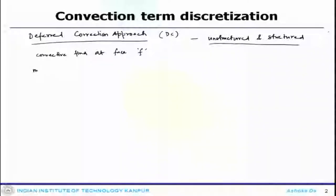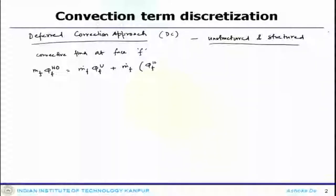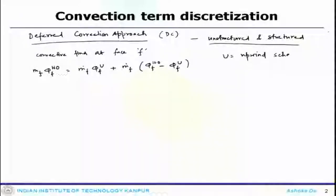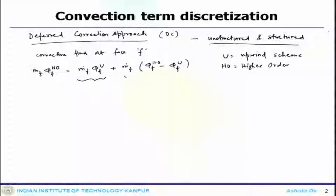The way it is formulated is: ṁ_F φ_F (higher order) = ṁ_F φ_F (upwind) + ṁ_F [φ_F (higher order) − φ_F (upwind)], where U stands for upwind scheme and HO stands for higher order scheme. It is essentially a blending function of the upwind scheme and the higher order scheme.